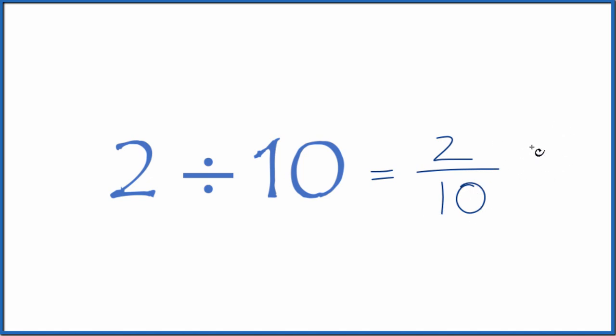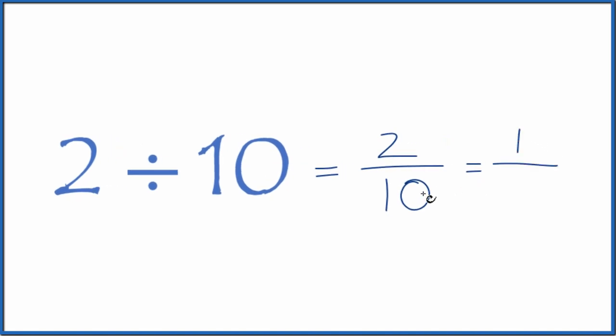And we can simplify this, because we can divide 2 into 2. 2 divided by 2 is 1. 10 divided by 2 is 5, so 2 tenths simplifies down to 1 fifth.